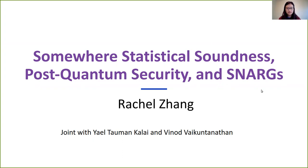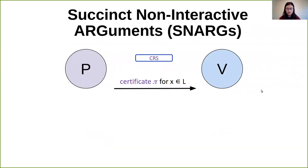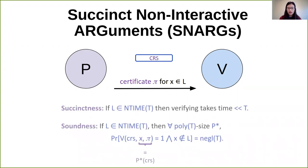I'll start by talking about SNARGs. A SNARG is a succinct non-interactive argument. The idea is that a prover wants to prove to a verifier that some statement x is in a language. Both parties have a common random string generated by a trusted third party. The prover generates a certificate pi in response to this string, and the verifier verifies pi and x jointly with the common random string. The first property we want is succinctness: if a language takes time t to compute, verifying it should take time much less than t. The second property is soundness: for any poly-t size cheating prover, they shouldn't be able to generate x and proof pi such that the verifier accepts if x is not actually in the language.